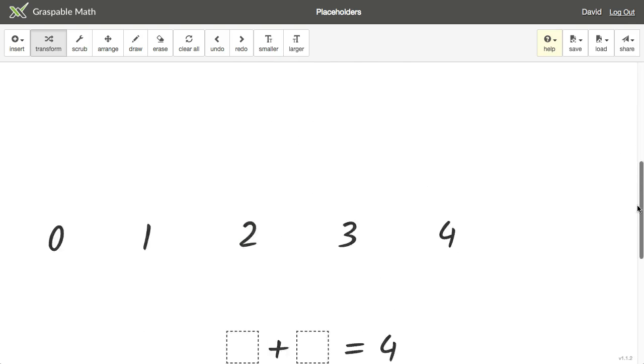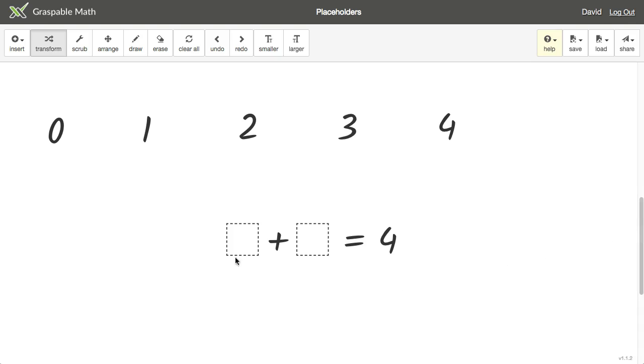Here's a similar question. If I have the equation box plus box equals 4, find values for the boxes that will make the two sides equal. Unlike two variables with the same name, which will always represent the same value, two placeholders do not guarantee that the value will be the same.